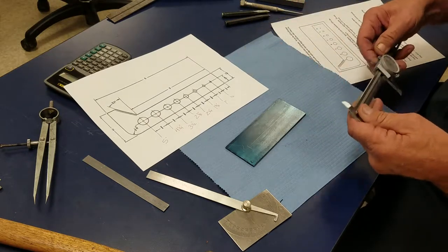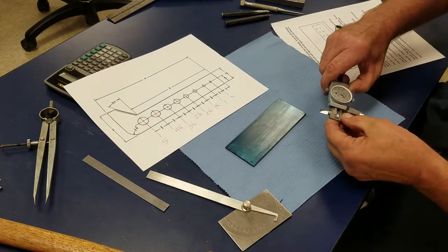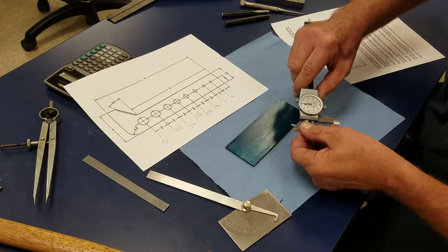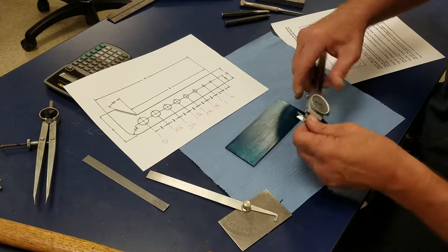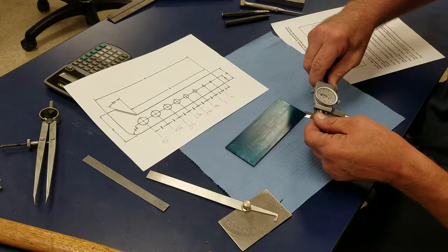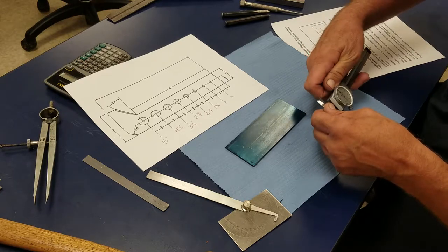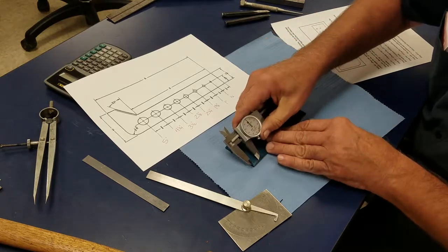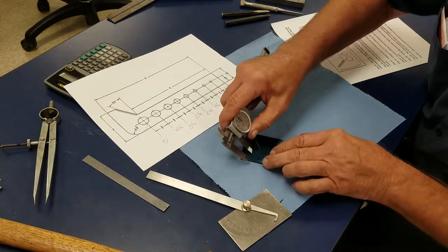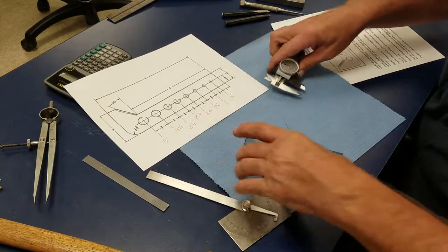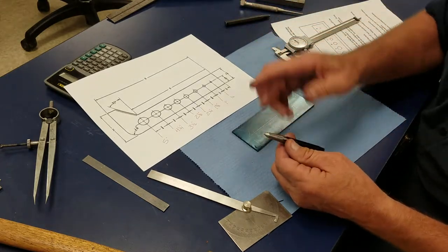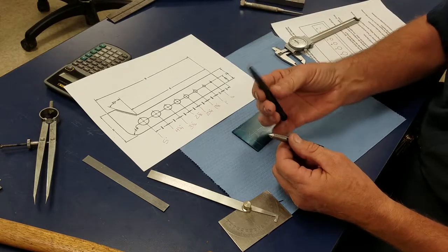What I'm going to do is set my calipers for a half inch in both directions. I'm going to set my calipers at a half inch, lock them down, and I'm going to go this way a half inch and I'm going to go this way a half inch. I'm going to put me a little prick punch mark.